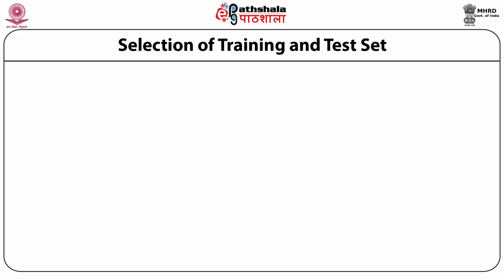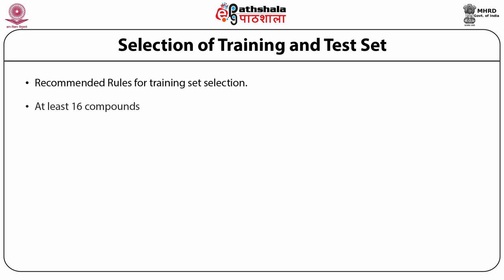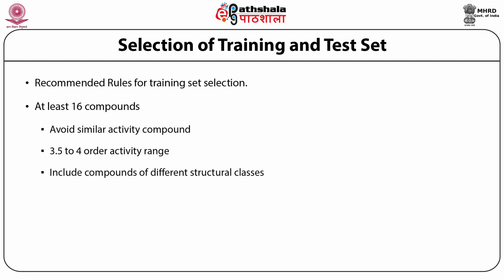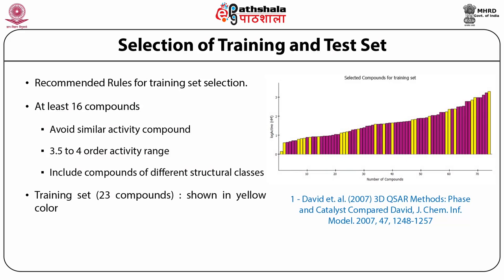Selection of training set and test set: we suggest at least 16 compounds minimum for the training set, and please do not use similar active compounds since they provide no additional information. As much as possible, include at least two to three, maybe four orders of activity range. Include compounds from different structural classes if possible. The example shows 23 compounds on the y-axis as log activity values — yellow colors are training set compounds and magenta colors are the 51 test set compounds, spanning very good to very poor activity.